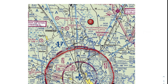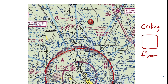What we're asked for here is what is the floor? So let's go ahead and define two words: ceiling and floor. Just like with a room in a house — if I had this box representing my room — the ceiling is up at the top and the floor is down at the bottom. That exact same concept applies with airspaces. When we're talking about the ceiling, we're talking about the top altitude at which that airspace exists. And the floor is the bottom of that airspace.